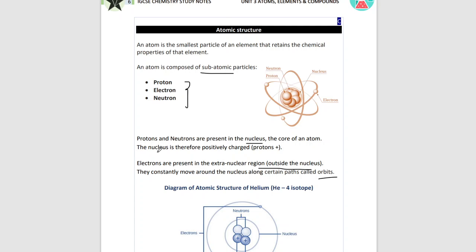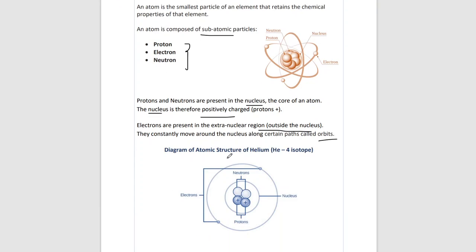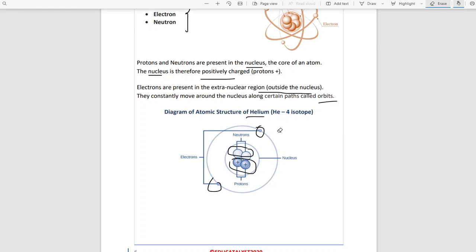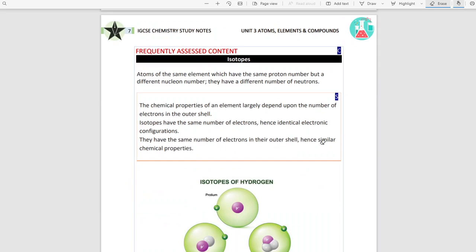The nucleus has a positive charge because neutrons have no charge and protons have a positive charge, but the shell has a negative charge. Here we have a diagram of the atomic structure of helium — two protons and two neutrons inside the nucleus, and two electrons in the shell.